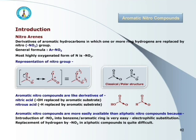Aromatic nitro compounds are just like the derivatives of nitric acid or nitrous acid, that is HNO3 or HNO2. If we replace the OH attached to the nitro group in nitric acid by an aromatic substrate, then we can say it is the derivative of nitric acid. Similarly, if we replace the hydrogen present in nitrous acid, HNO2, by an aromatic substrate, then we can say it is the derivative of nitrous acid.